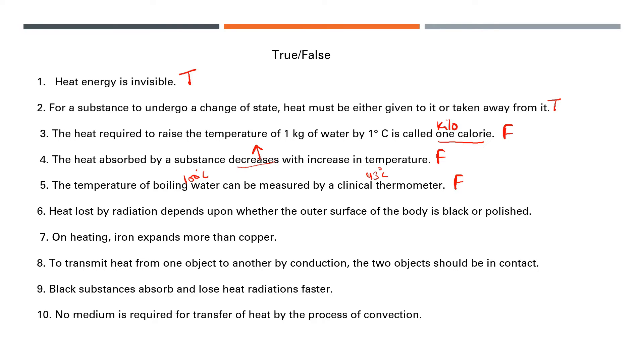Heat loss by radiation depends upon whether the outer surface of the body is black or polished. Yes, this is true. On heating, iron expands more than copper. No, copper expands more than iron. To transmit heat from one object to another by conduction, the two objects should be in contact. Yes, they should always be in contact.